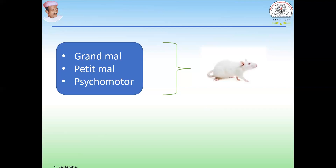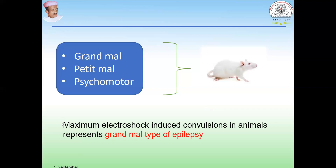This behavior can also be observed in animals, so animals are used for screening of anticonvulsant drugs. In today's method, we are using maximum electroshock-induced convulsion in animals. This electroshock method, also called the MES model, develops a grand mal type of epilepsy in rodents.